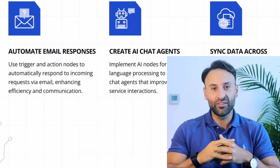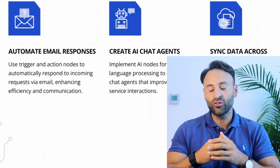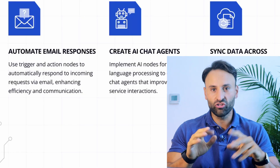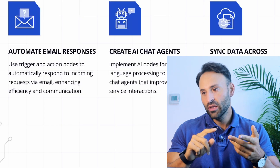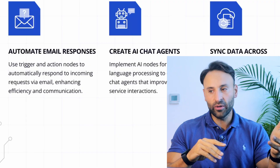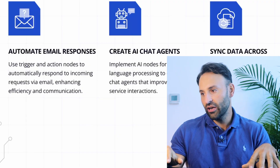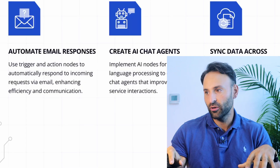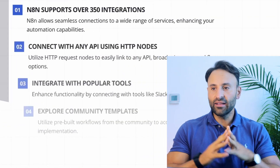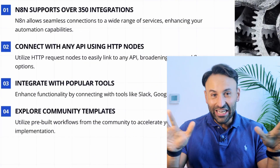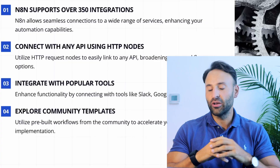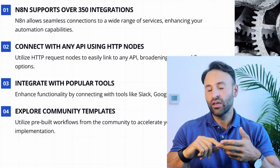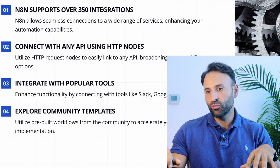You can automate repetitive emails, handle spam, create AI chat agents for your business, and sync data across different applications. N8N works with over 350 integrations — Google Sheets, email providers, different APIs, and much more. There's a huge number of applications and a huge library of templates I'd recommend using if you're new to this.